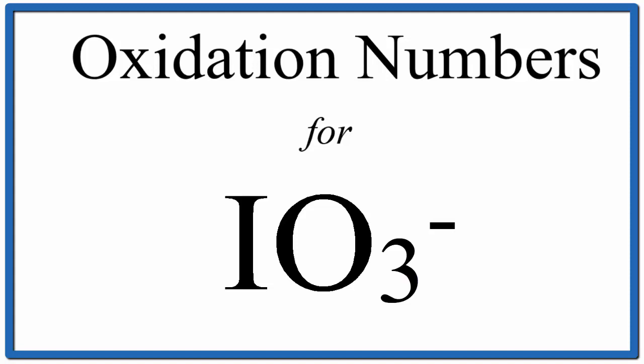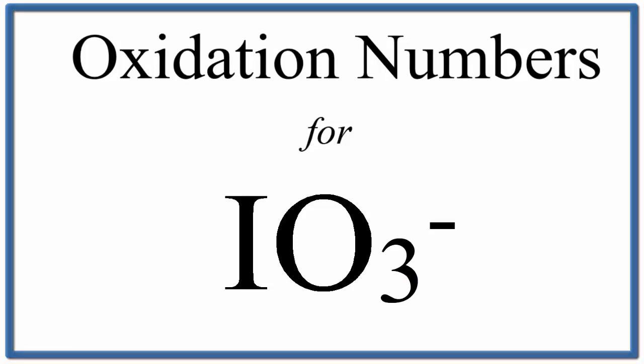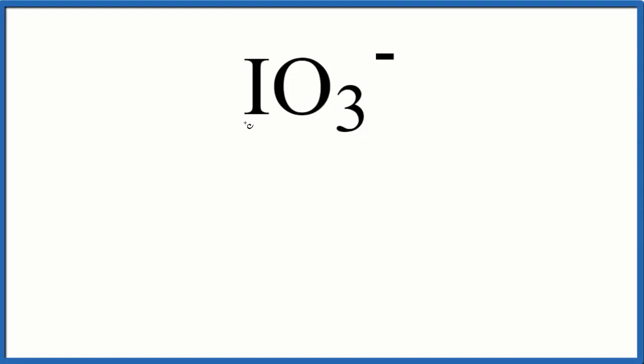In this video we'll find the oxidation number for iodine in IO3 minus, the iodate ion. We know that if we add the oxidation numbers up for I and the O3 here, these three oxygens and the iodine, it's going to equal this minus, a negative one.